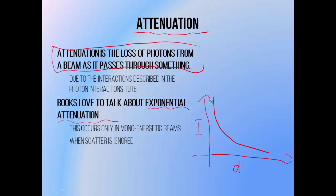It means that when you have a lot of photons, such as at very shallow depths, the intensity drops very quickly — lots of photons mean lots of interactions. But when you have fewer, like when your depth is greater, it drops off more slowly — fewer photons mean fewer interactions. It's only a pure exponential relationship when the beam contains photons of only one energy and when the presence of scattered photons is ignored.